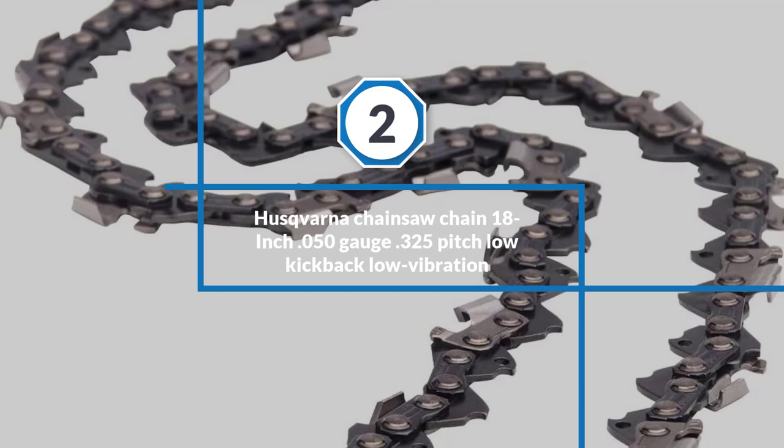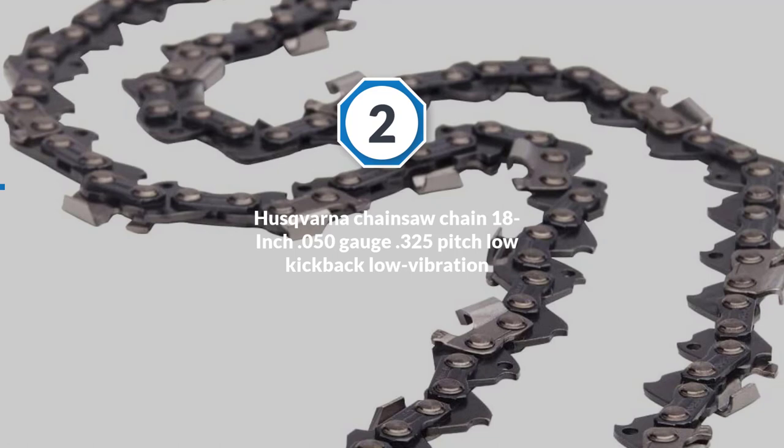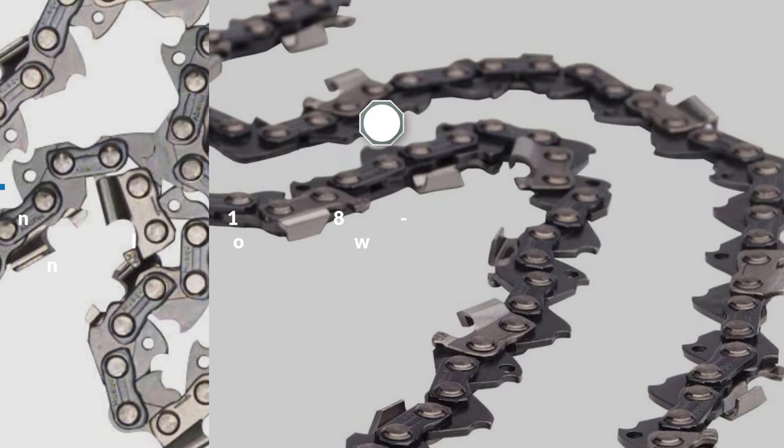Number two: Husqvarna chainsaw chain, 18 inch, 0.050 gauge, 0.325 pitch, low kickback, low vibration.